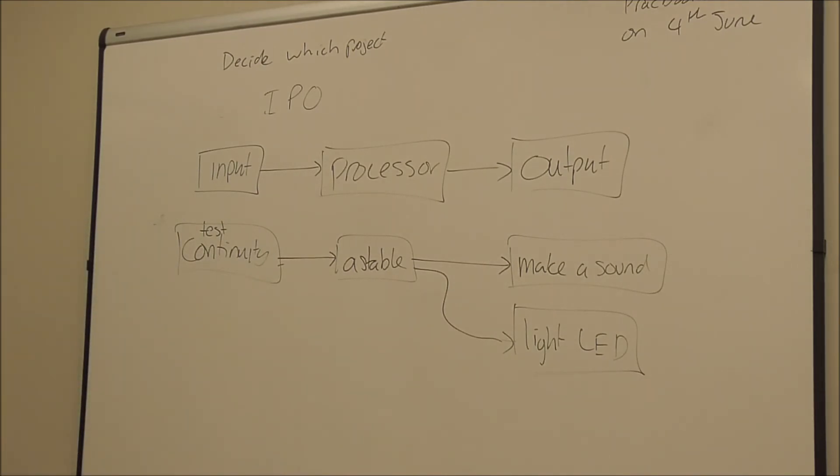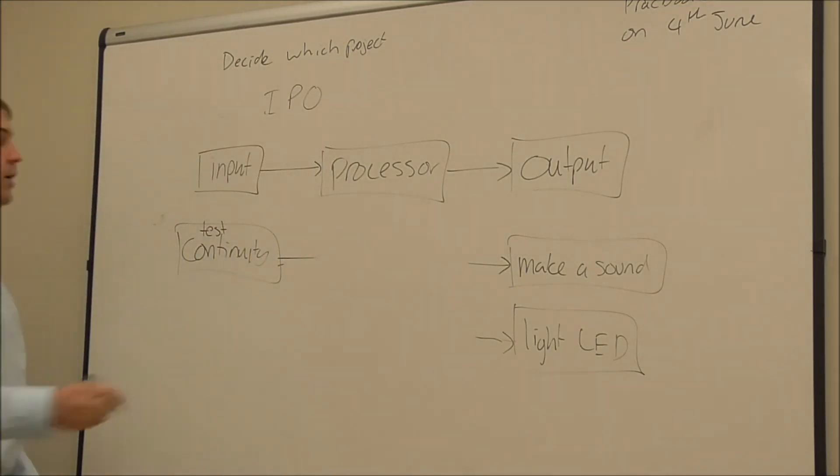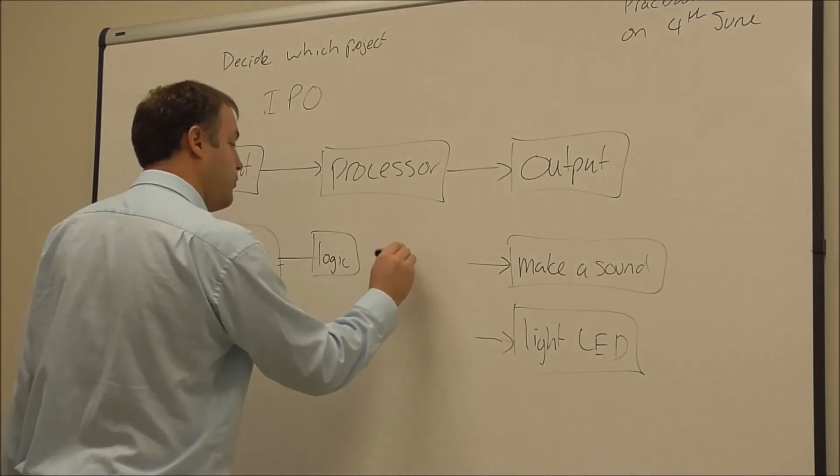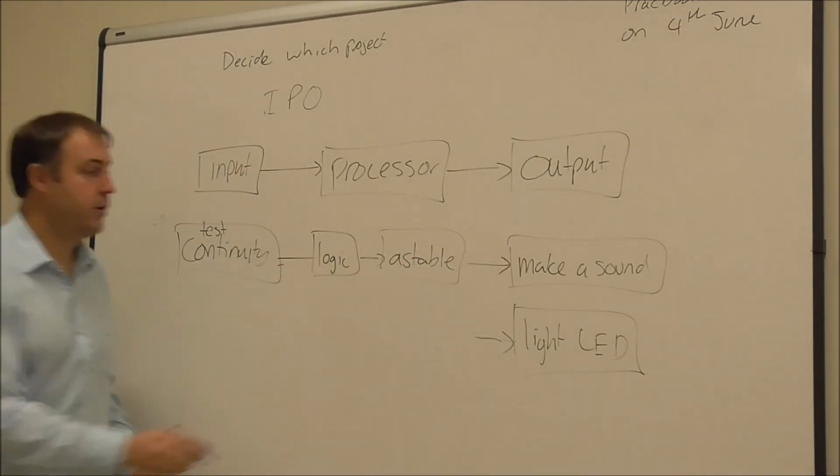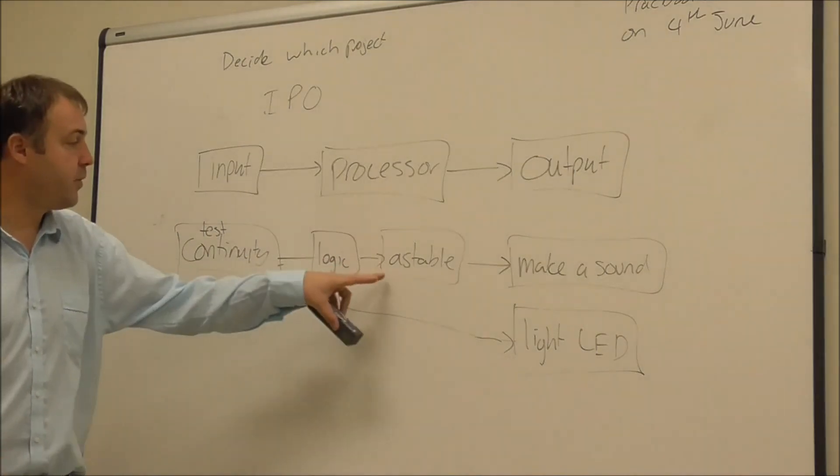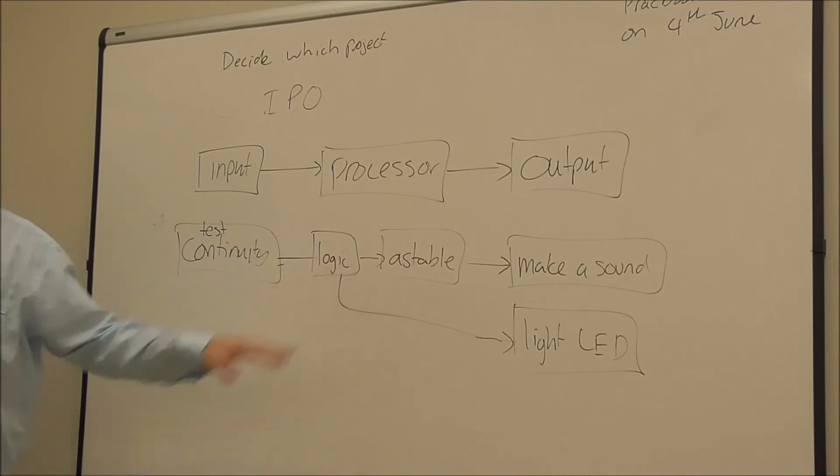Now sometimes you might need two processor boxes. So let's say in order for this to work, I had some logic which then drove or told the astable to go. So I could have a flexible diagram that looks something like this. So I've got some logic here and then I've got an astable. And the input from the astable is the output from the logic there. So in reality what I can have, I can have as many of these as I like. I can have a whole heap of them. It all just depends on what your project needs to make it work, what you think it needs to do.